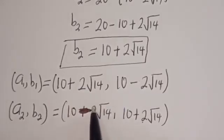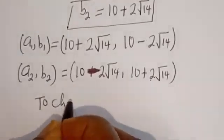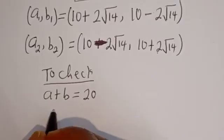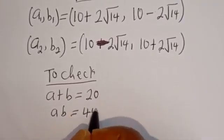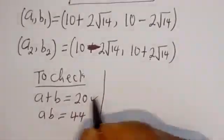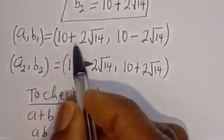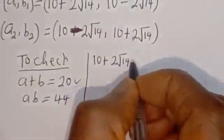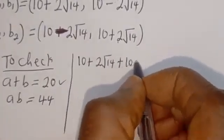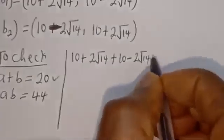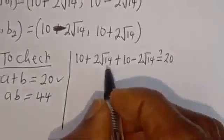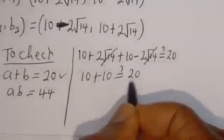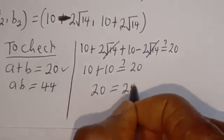Let's check to confirm the answer is correct. Using a1 and b1: a plus b equals (10 plus 2 root 14) plus (10 minus 2 root 14). The root 14 terms cancel, leaving 10 plus 10 equals 20, which is true.